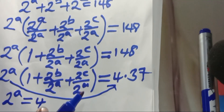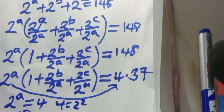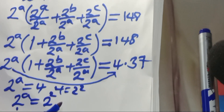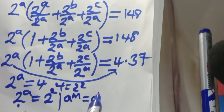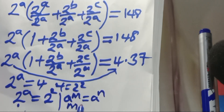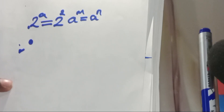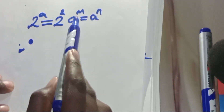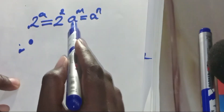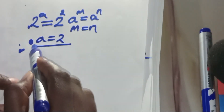We can express 4 as 2 to the power 2, so 2 to the power A equals 2 to the power 2. Given that the bases are common — using the property that if A^M equals A^N then M equals N — we get A is equal to 2. That is the value of A.